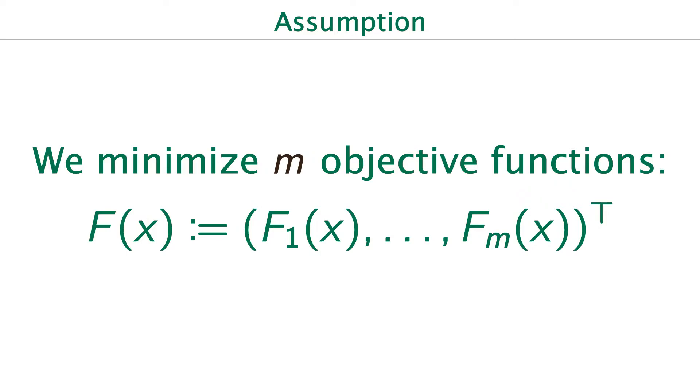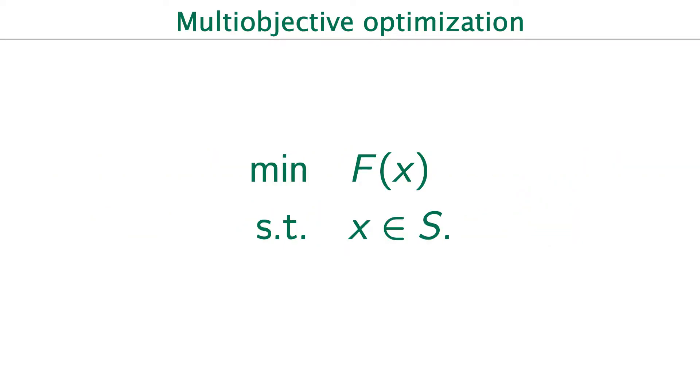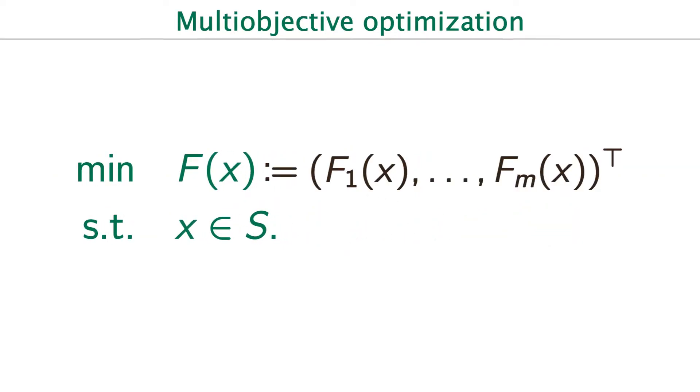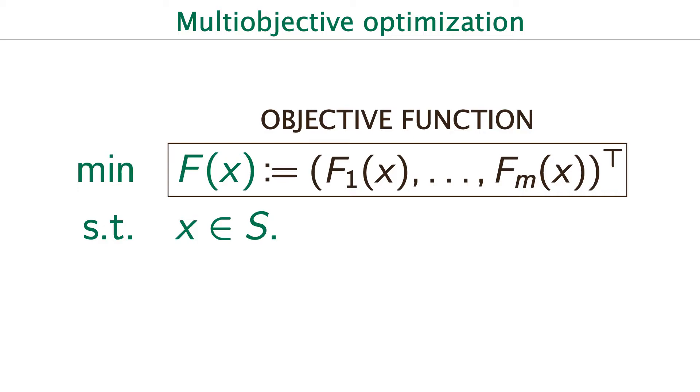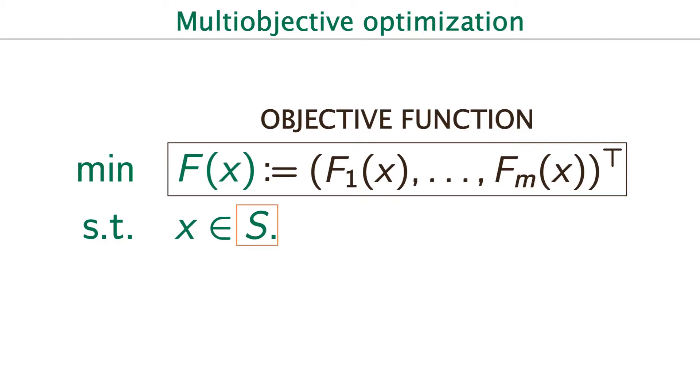Then, we can define the multi-objective optimization problem as in the display. F is a vector-valued function defined by F1, ..., Fm. And it is called the objective function of the multi-objective optimization problem. Also, we call large S the constraint set.